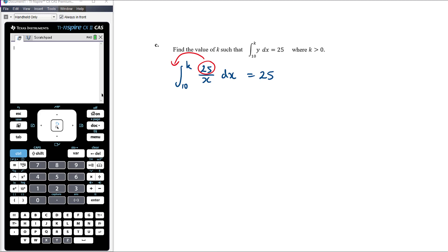Like we did before, we can take the 25 out here. Then we can divide both sides of the equation by 25. So what we have here is the integral from 10 to k of 1 on x is equal to 1.